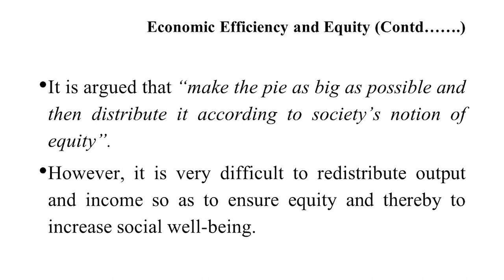Some economists argue: make the pie as big as possible and then distribute it according to society's notion of equity. But it is not possible in practice to make the pie as big as possible, because it is very difficult to redistribute output and income so as to ensure equity and thereby increase social welfare. In this case, it is generally assumed that total economic surplus is the true measure of social welfare, but it is not possible that a rupee gives the same satisfaction to all producers and consumers.